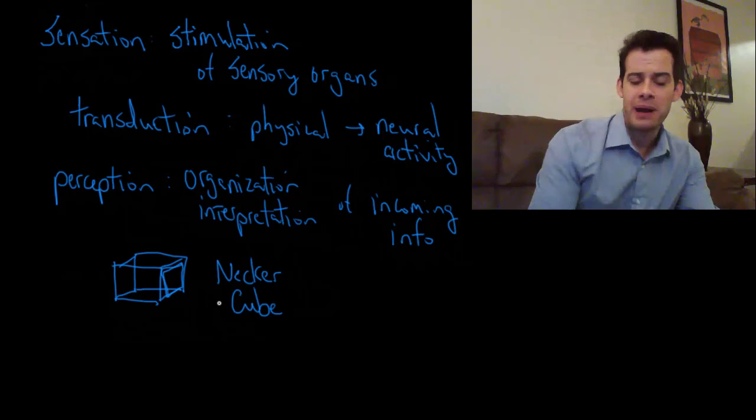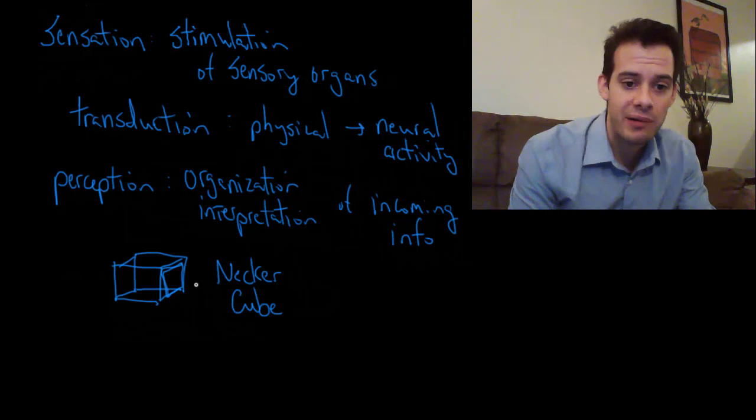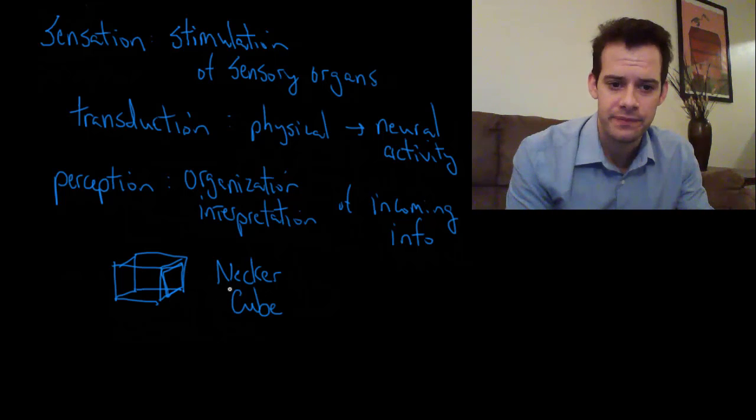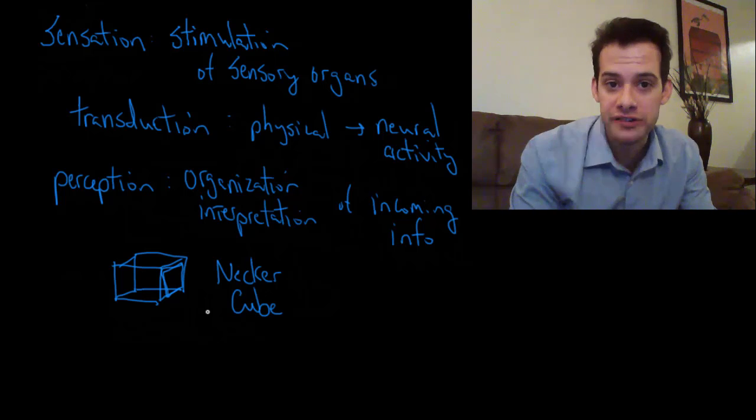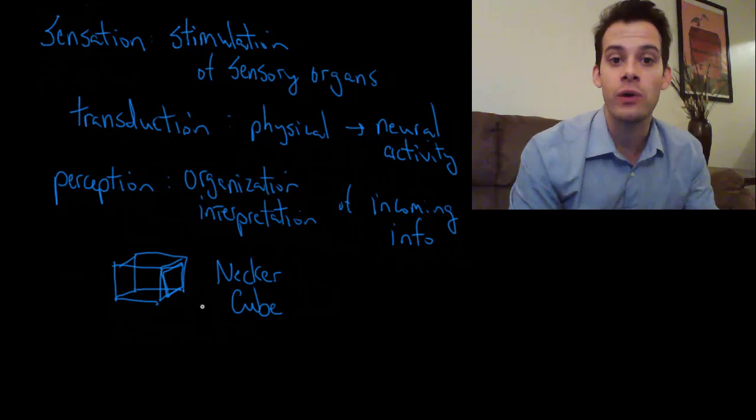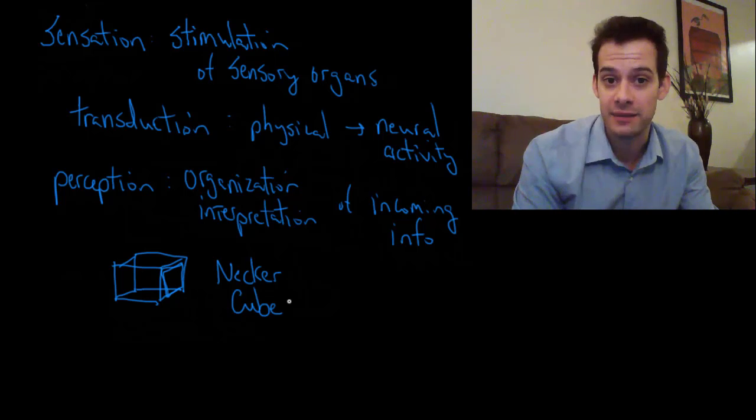Even though I know you might misinterpret it, you're going to misinterpret it in predictable ways. This is really the key to understanding how illusions work. Illusions are all about causing us to misperceive things but knowing that we're going to misperceive them in predictable ways.